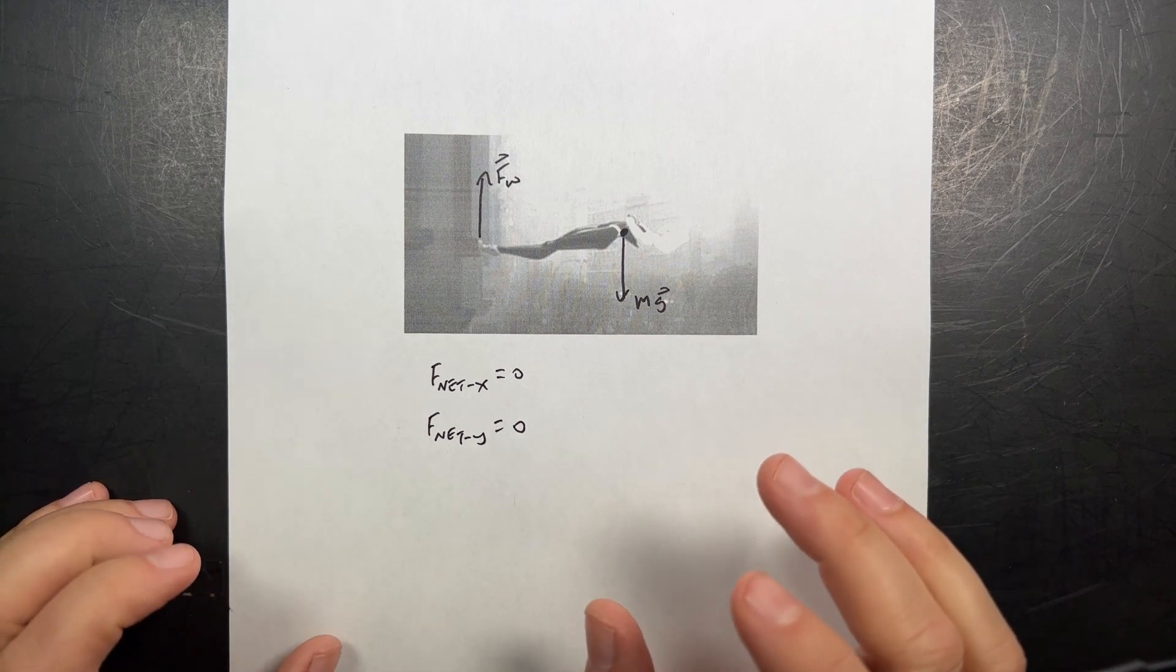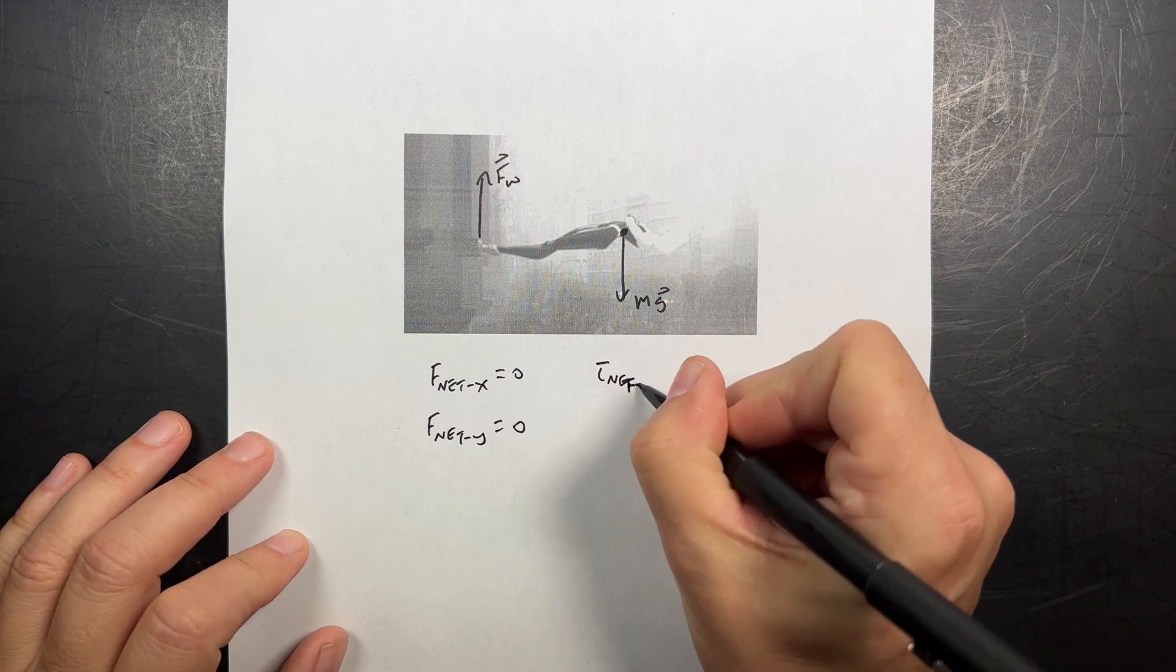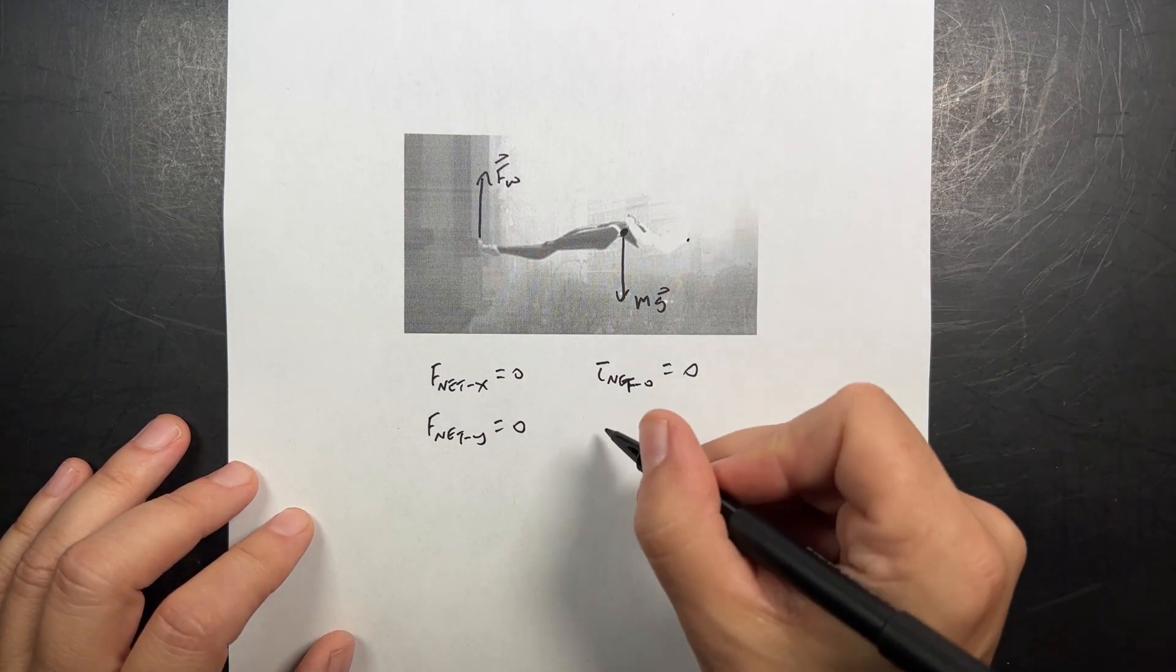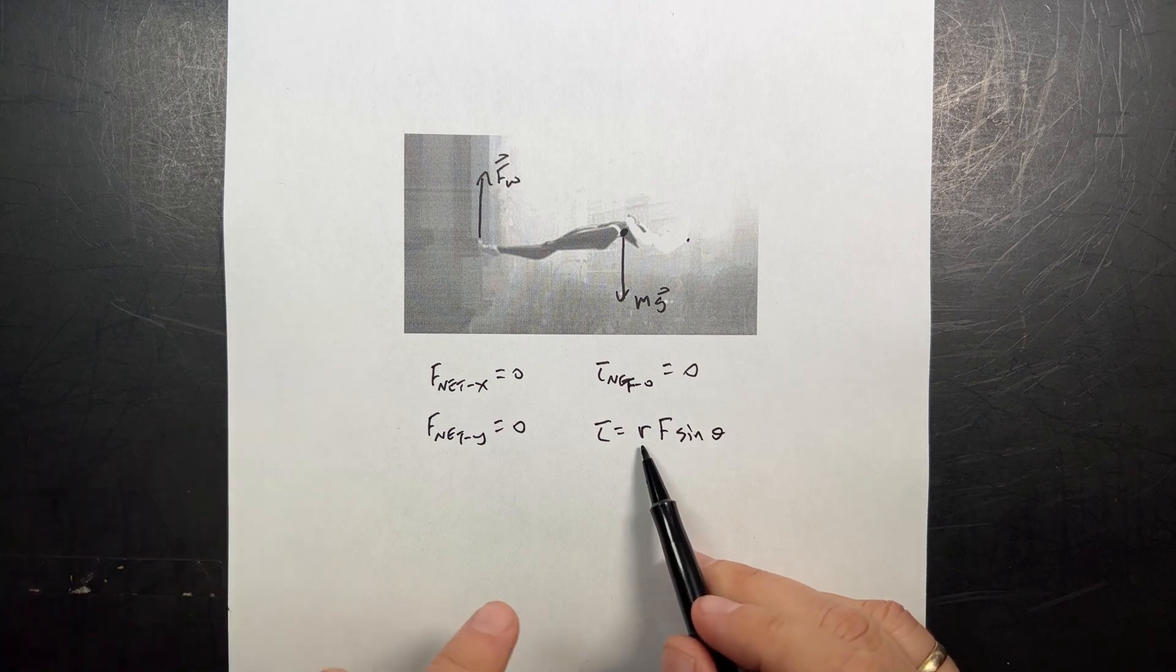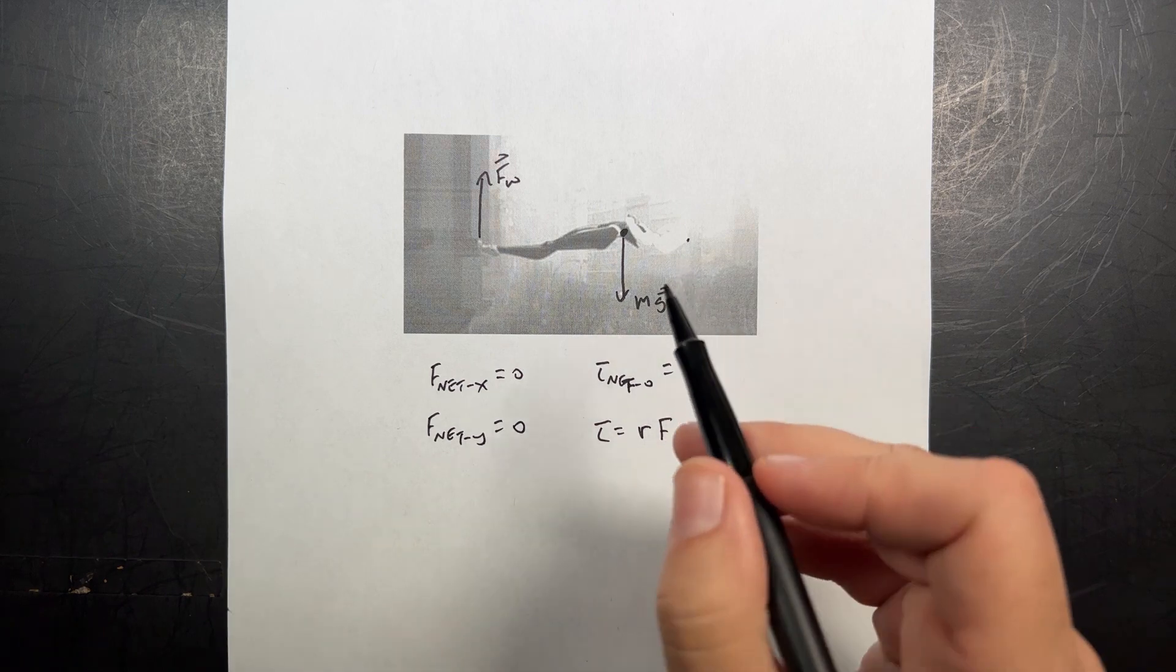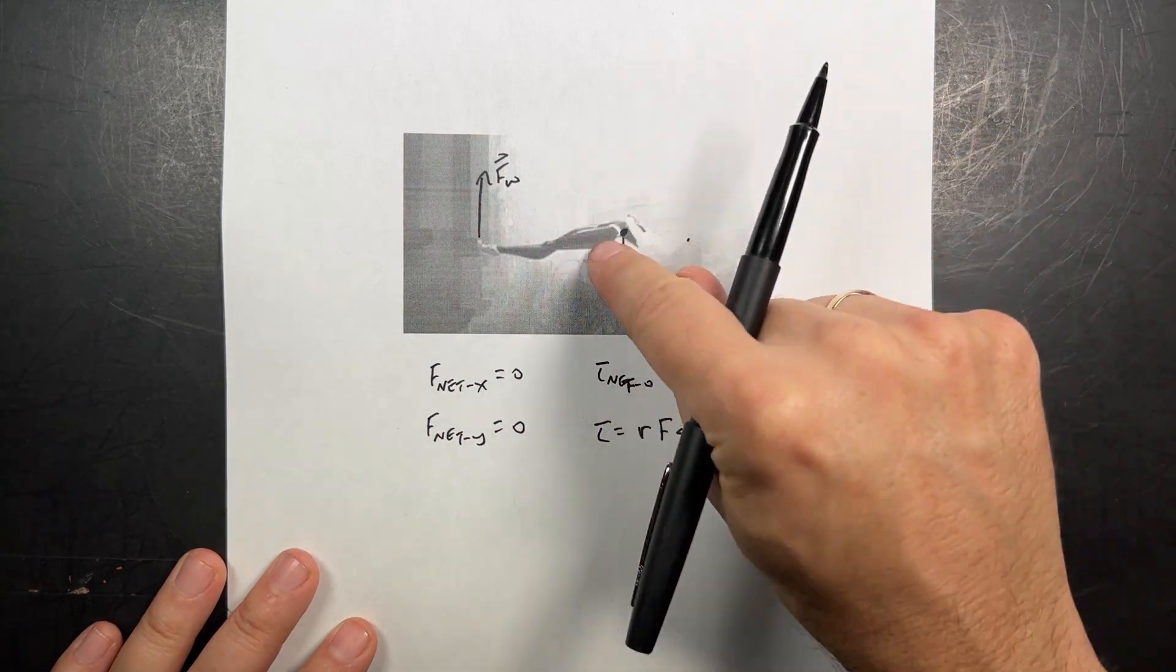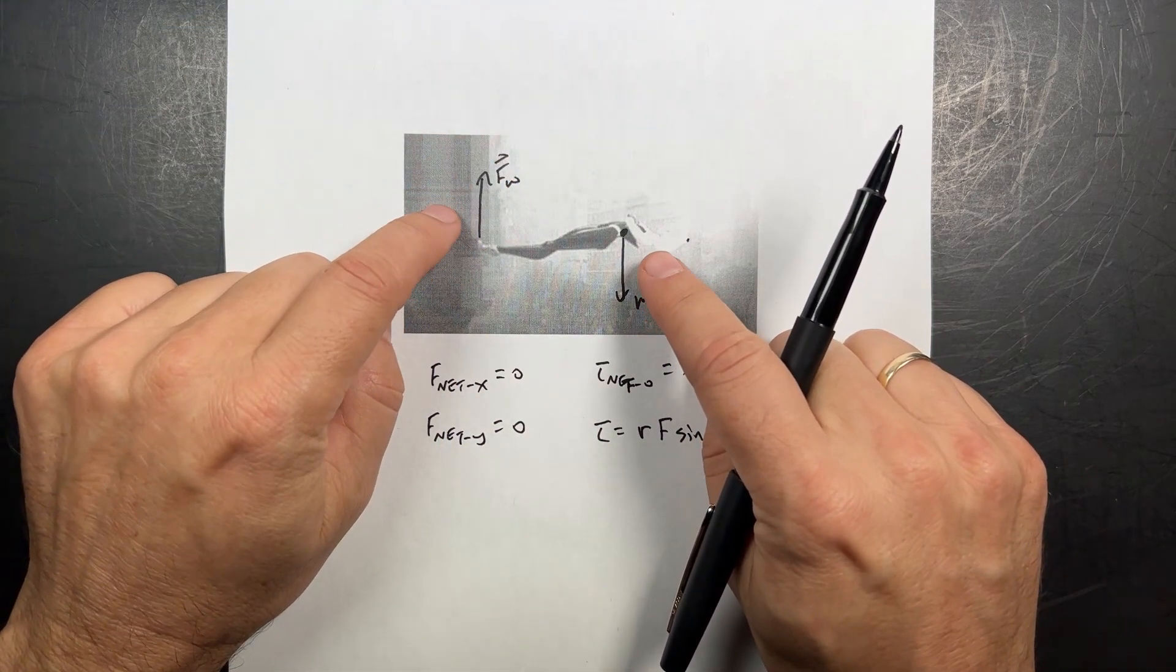But we also have to consider the rotational motion. If she doesn't rotate, then the net torque about some point O has to also be 0. It doesn't really matter where you pick this point O. Remember, torque we can calculate as RF sin θ, where R is the distance from the pivot point to where the force is applied, F is the force, and θ is the angle between them. In this case, θ would be 90 degrees, so sin 90 is 1. This would be a positive torque because it would make her rotate this way, and this would be a negative torque. But these two cannot add up to 0.